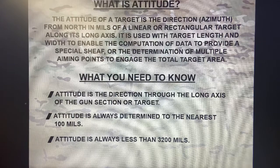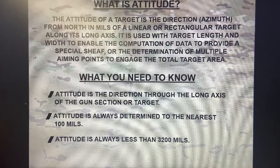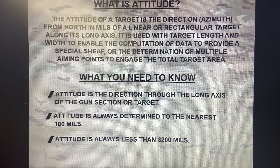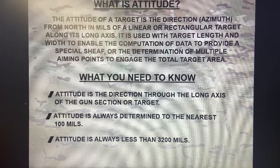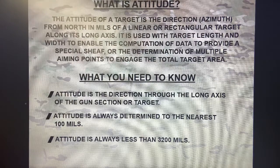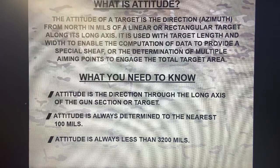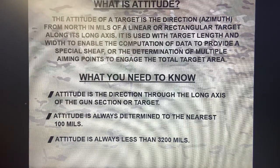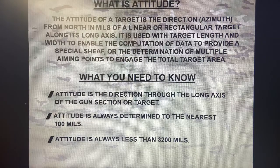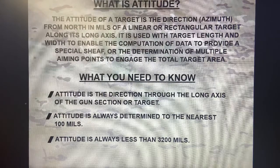Attitude is always determined to the nearest 100 mils, and attitude is always less than 3200 mils. So, thinking about 6400 mils as a full circle — like a pie — we're trying to get the azimuth portion to be that small chunk of the pie, not the entire pie. Just a small piece, not the whole thing.